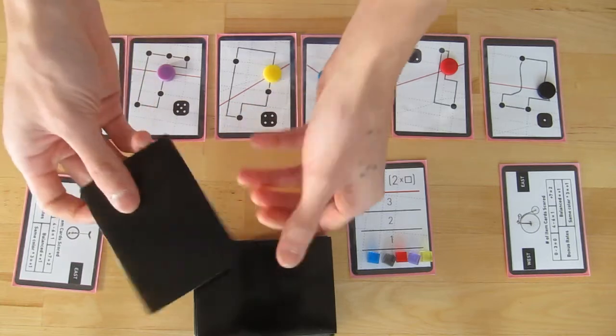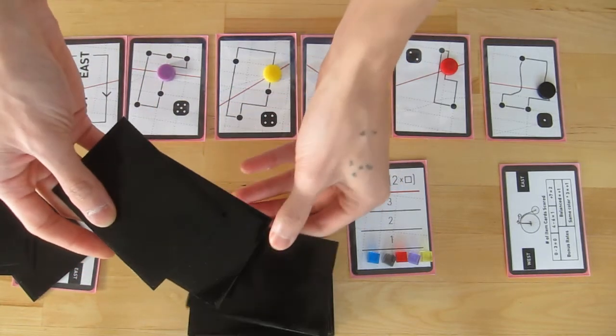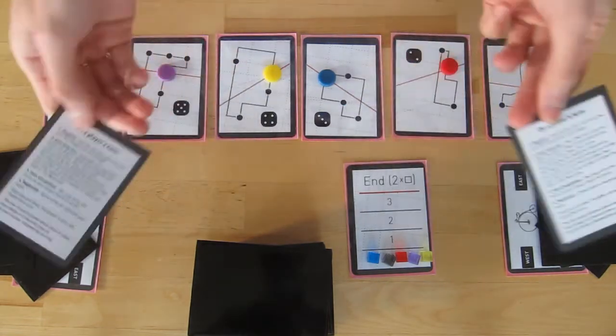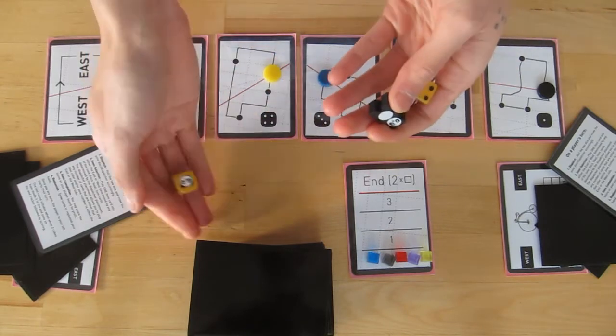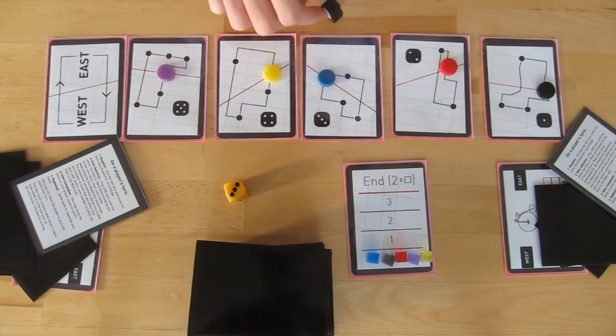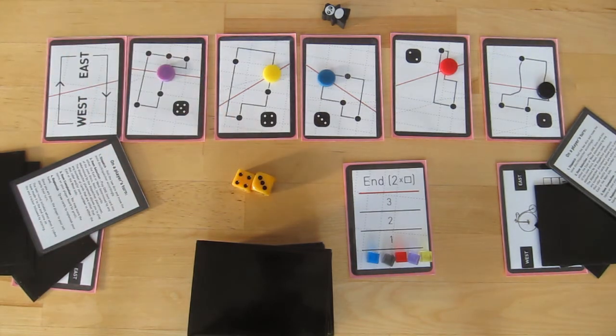Give each player three cards and a player aid and the panda meeple. Roll one dice, look at what the number is, and place the panda meeple beside that zone number. You are now ready to play a two player game of Classy Carriers.